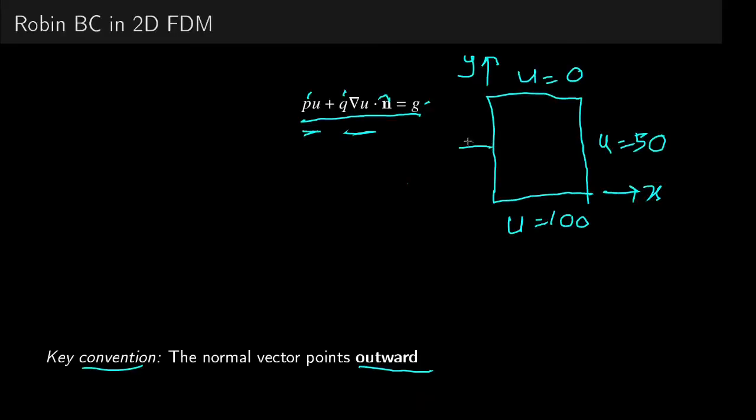For simplicity, we take them as scalars or constants here. The idea, as always, is to turn the continuous form of the Robin BC equation into its discrete form. So we need a set of points, i.e., stencils, to write the discrete form.